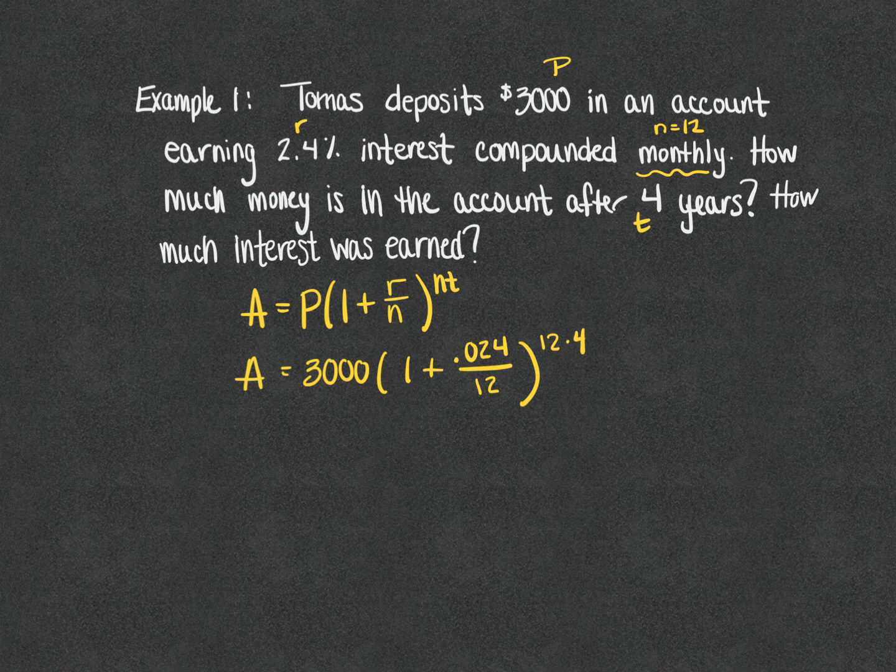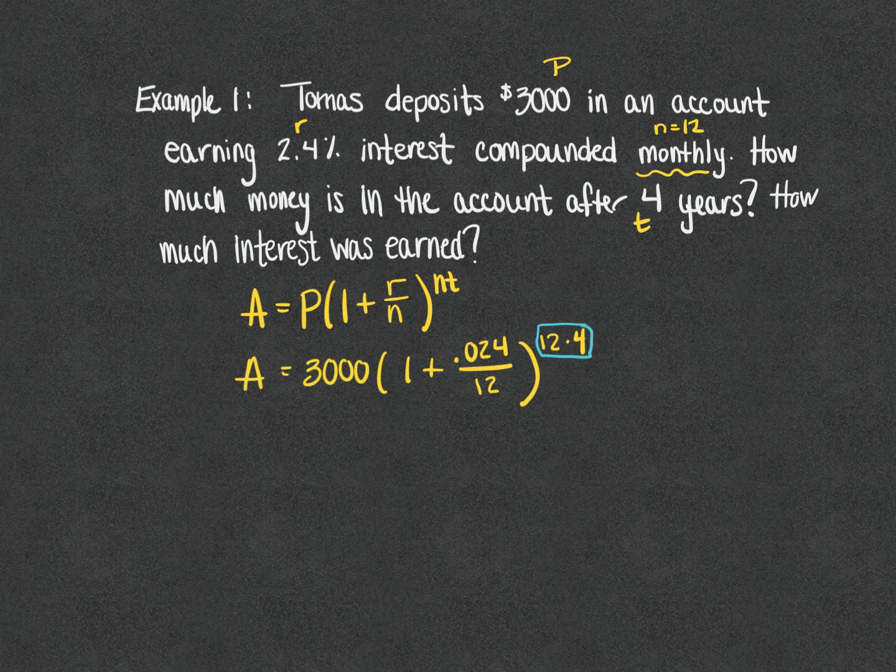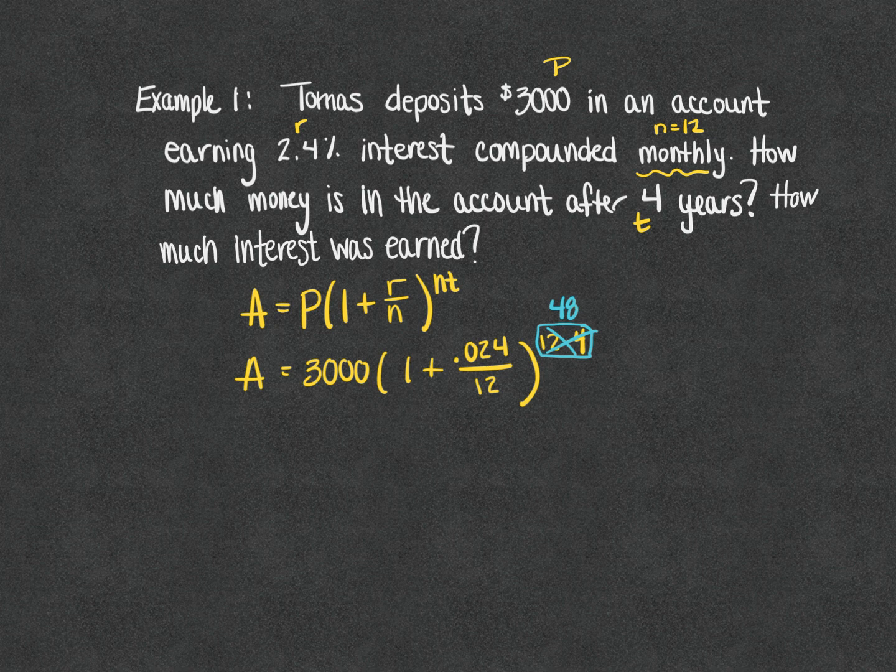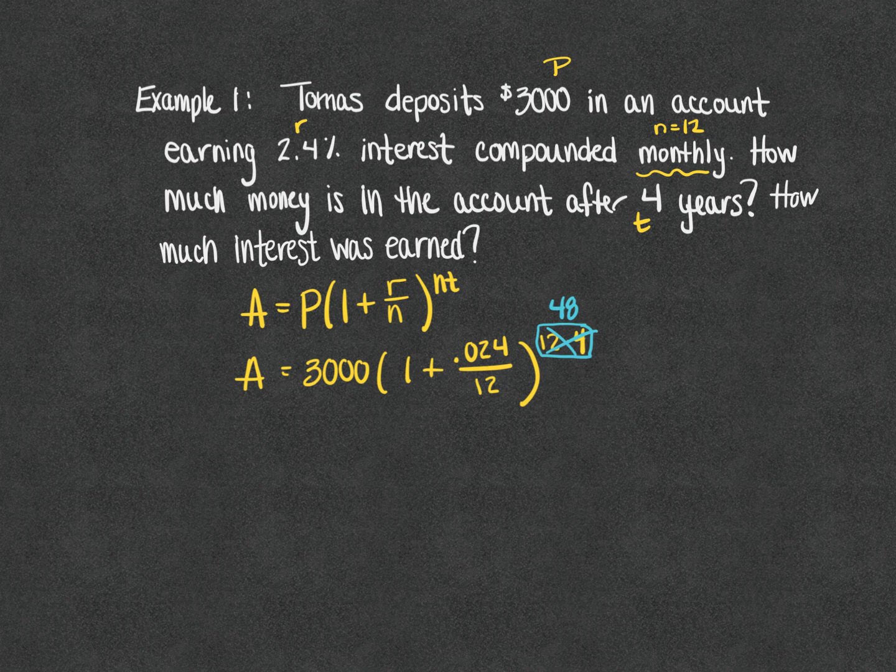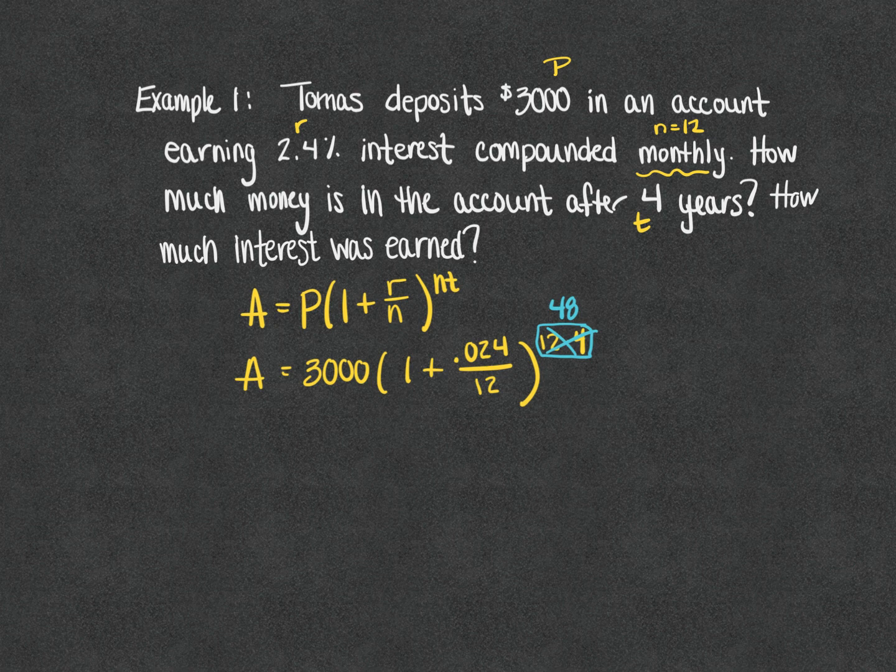One of the things that I'm going to strongly encourage you to do is for the exponent, before you type this into your calculator, go ahead and multiply the 12 times 4 together to create an exponent of 48 and enter it in your calculator that way. Calculating that exponent ahead of time will mean that you don't need parentheses for the 12 times 4.